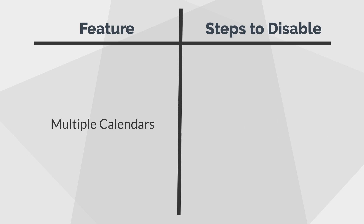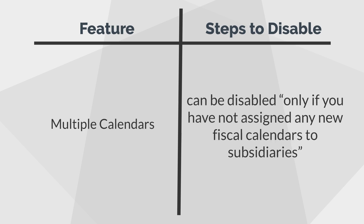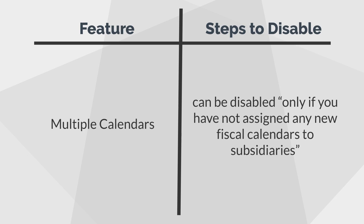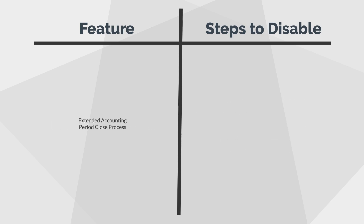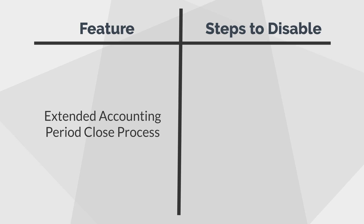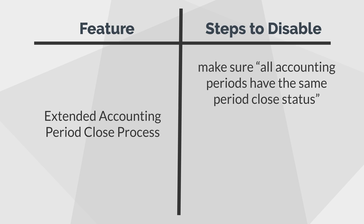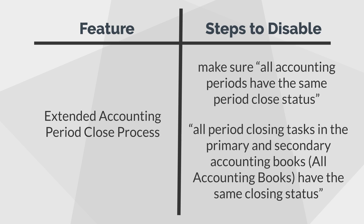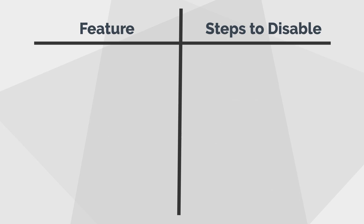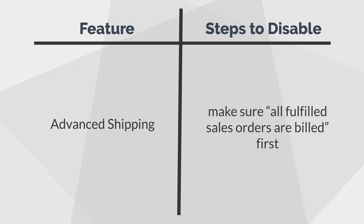Multiple Calendars, which is only available in OneWorld, can be disabled only if you have not assigned any new fiscal calendars to subsidiaries. And if you have been using the feature Extended Accounting Period Close Process, you would need to make sure that all accounting periods have the same period closed status and that all period closing tasks in the primary and secondary accounting books have the same closing status in order to disable it. Disabling Advanced Shipping requires that all fulfilled sales orders are billed first.